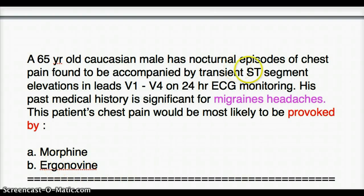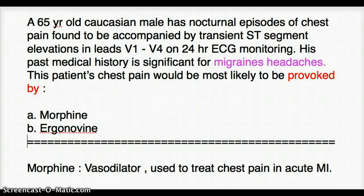Clearly, the answer is Ergonovine because we just discussed how it can cause transient ST segment elevation. Some might consider morphine, but morphine does exactly the opposite — it is a vasodilator rather than a vasoconstrictor, and it is used to treat chest pain in MI rather than provoke it. So the answer is not morphine; the answer is Ergonovine.